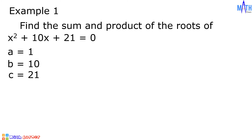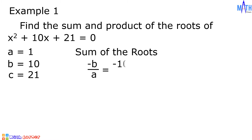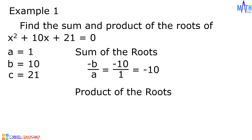Let us find the sum of the roots. Negative b over a is equal to negative 10 over 1, which equals negative 10. The sum of the roots is equal to negative 10. Next is the product of the roots: c over a is equal to 21 over 1, which is equal to 21. The product of the roots is equal to 21.